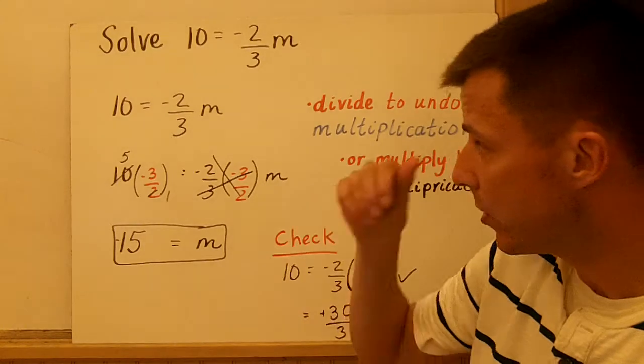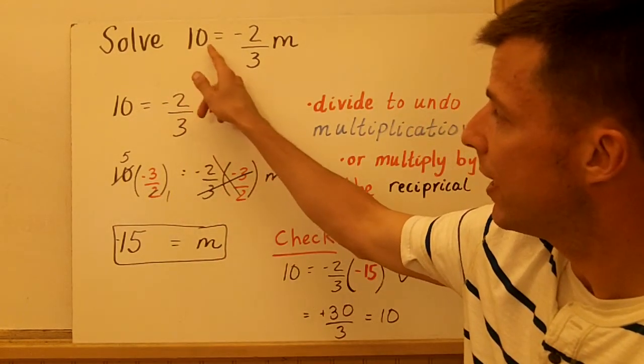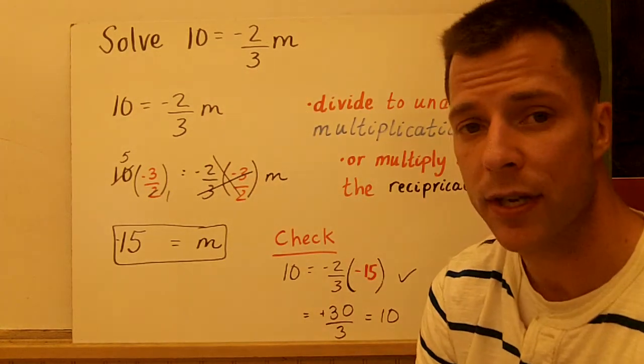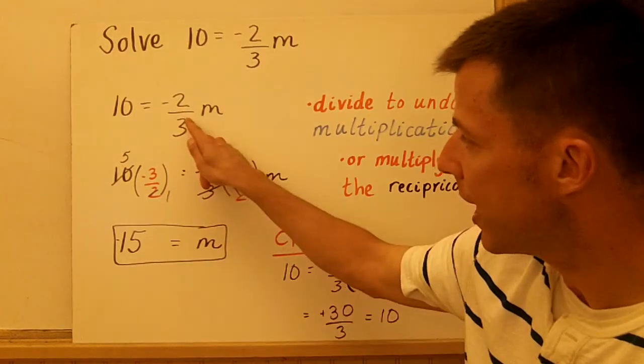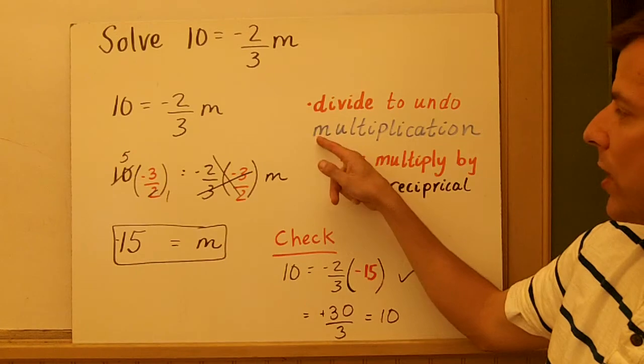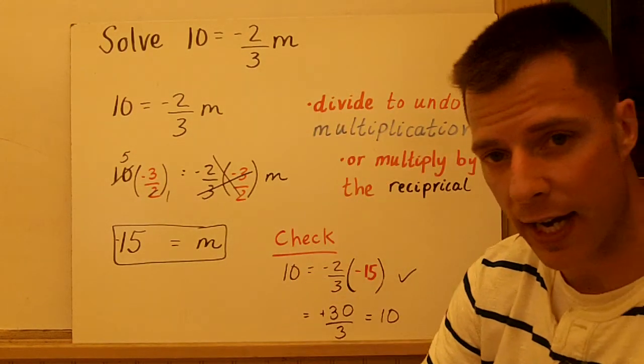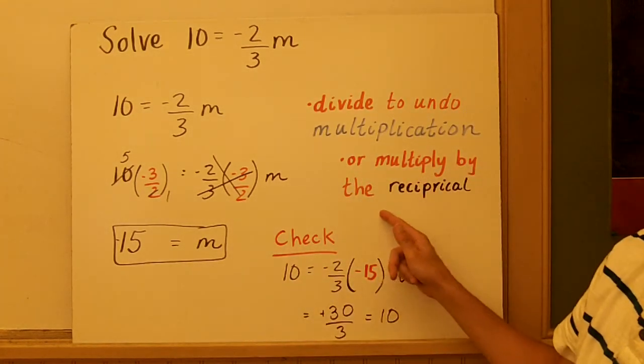Our third equation involves a fraction. So we have solving 10 equals negative 2/3 m. So our variable is m in this case. Now, you might see the fraction and think division. Well, look what's happening: negative 2/3 times m. So in order to undo the multiplication, we're going to divide again. You can divide, or you can actually go one step further and just multiply by the reciprocal.